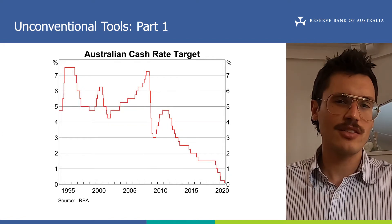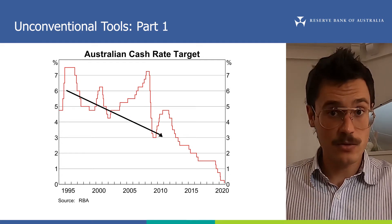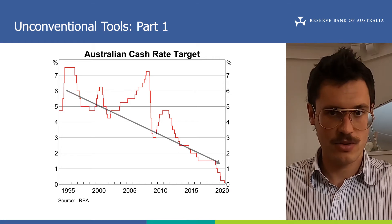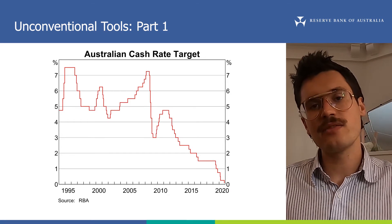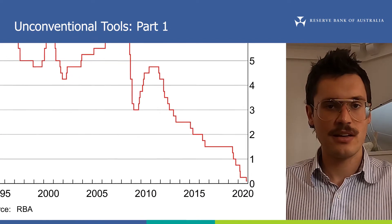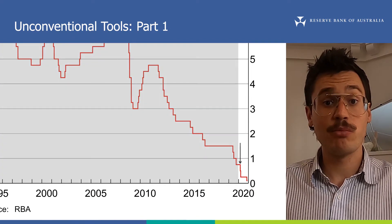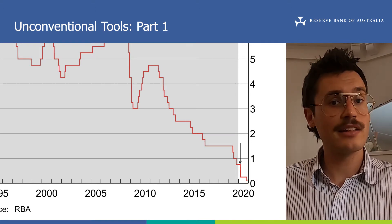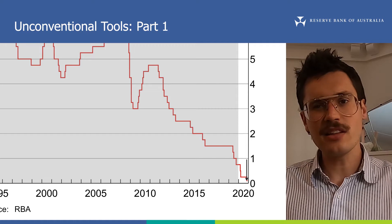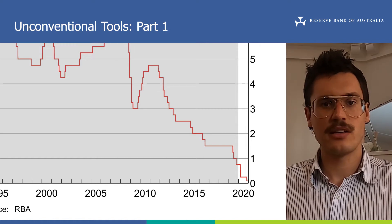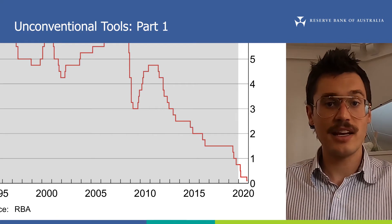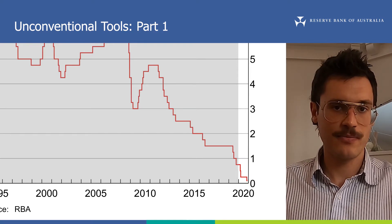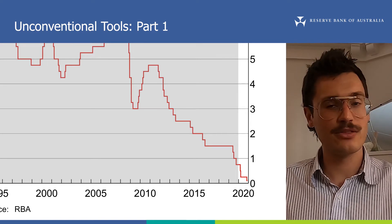But over the past 30 years or so, the cash rate target has trended downwards, and this is a global trend that's affected many economies around the world. At the onset of the COVID-19 pandemic in February 2020, the level of the cash rate target was 0.75%, and by November 2020, the RBA had lowered it to 0.1%. This is the lowest ever level for the cash rate. With the Reserve Bank Board stating that a negative cash rate is extraordinarily unlikely in Australia, this is also probably its lowest practical level.